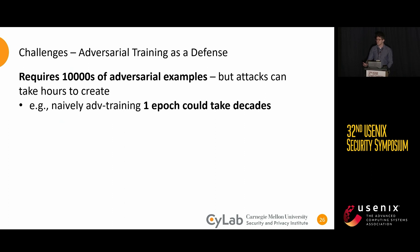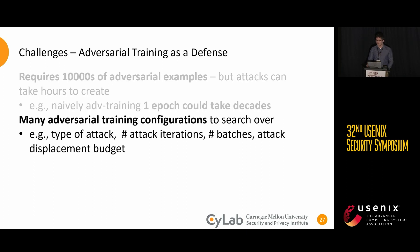Adversarial training in the raw binary domain presents unique difficulties. It requires tens of thousands of adversarial examples, and some attacks can take around an hour each to create — meaning training just one adversarial training run on a single server could take around a decade to complete. We also want to explore different configurations of adversarial training, including training with different types of attacks, different numbers of iterations, batch sizes, and displacement budgets.